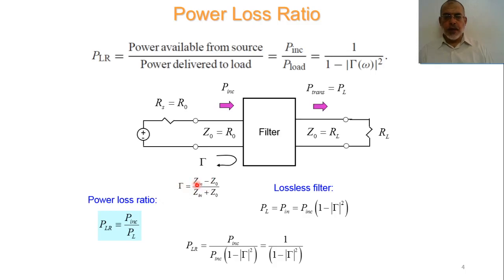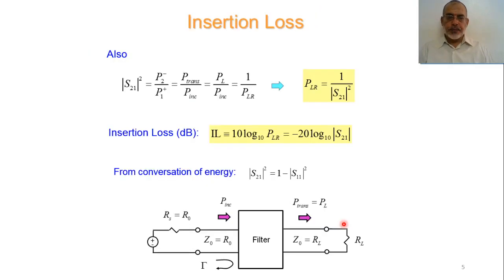The power delivered to the load equals the incident power multiplied by (1 - |Gamma|²). Furthermore, (1 - |Gamma|²) is equivalent to |S21|², the magnitude squared of the transmission coefficient. So the Power Loss Ratio, which is 1 / (1 - |Gamma|²), is equivalent to 1 / |S21|².